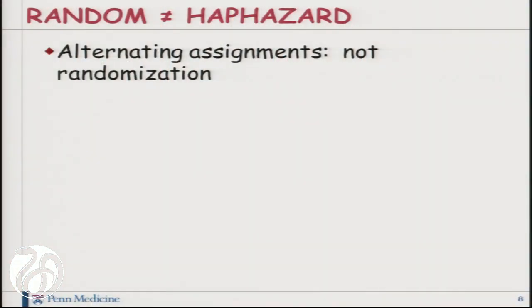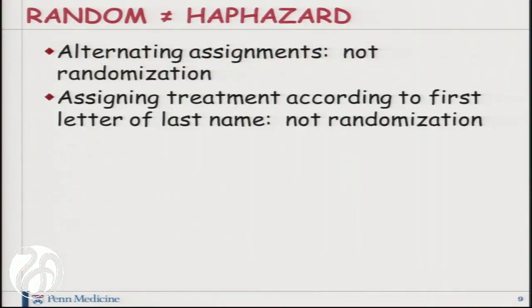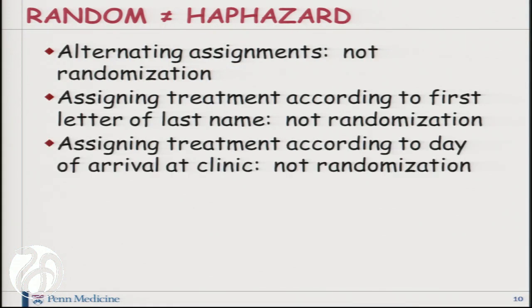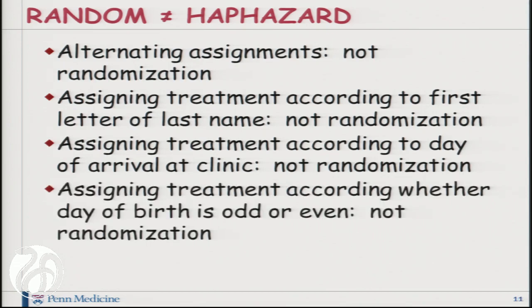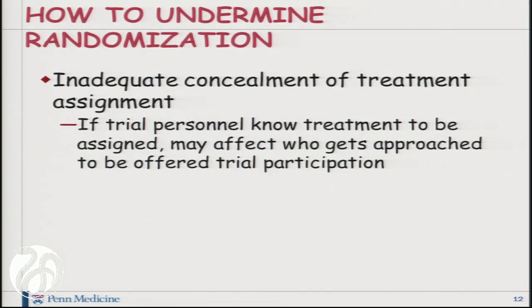Random does not equate to haphazard. Alternating treatment assignments is not randomization. Assigning the treatment according to the first letter of the last name is not randomization. Assigning the treatment according to the day of arrival at clinic is not randomization. Assigning the treatment according to whether the day of birth is odd or even is not randomization. These are all some kind of systematic assignments, and they can all undermine the impact of randomization.